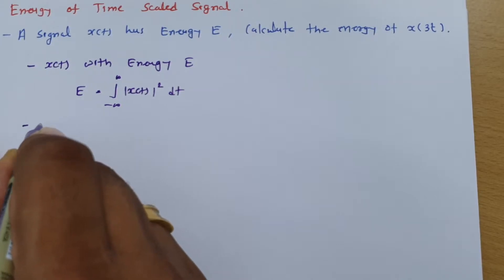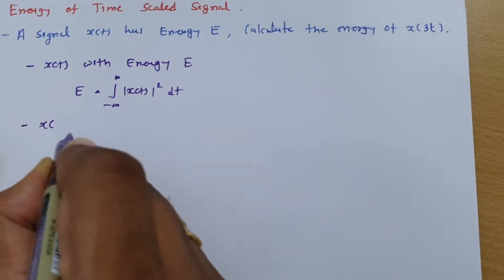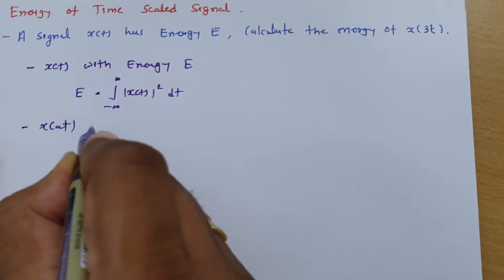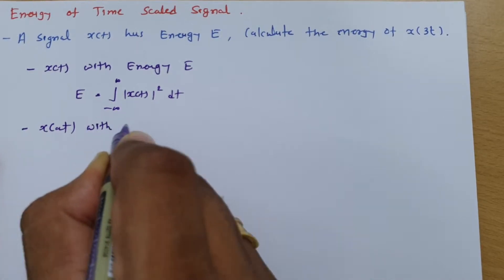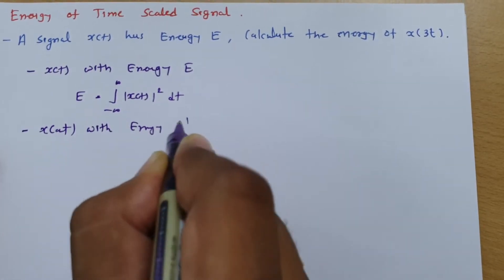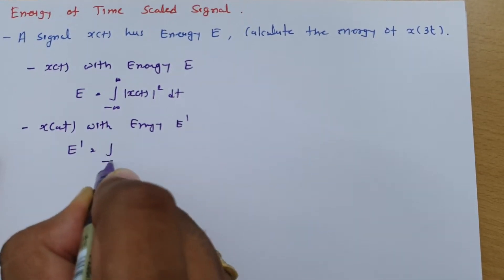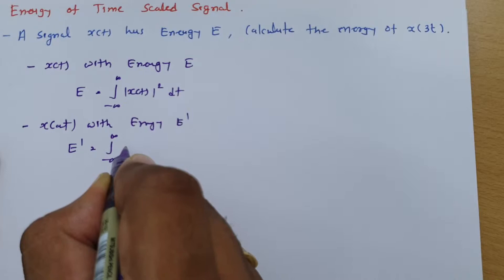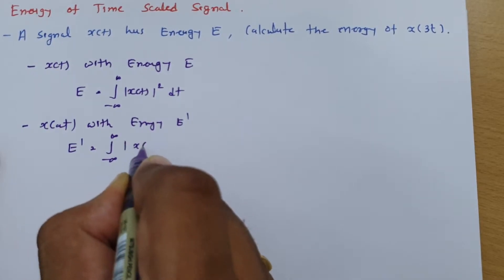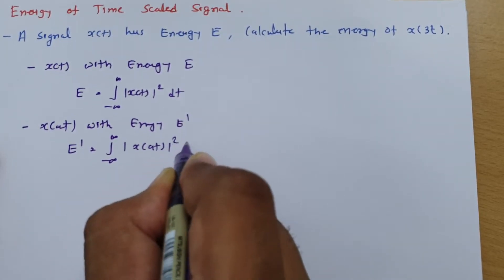And if you scale signal x(t) by at with energy, let's say E', then that E' we can calculate as integral from minus infinite to infinite of |x(at)|² dt.